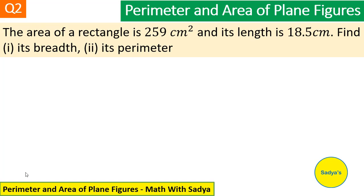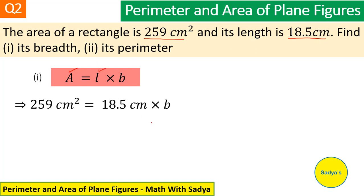We know that area of rectangle is equal to length into breadth. Now, here in this question, they have given us the area which is 259 cm square and length is 18.5 cm. So we substitute area and length in this formula and we get 259 cm square is equal to 18.5 cm into breadth.